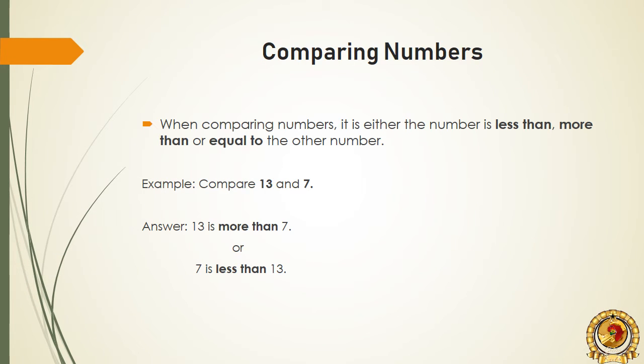Comparing numbers. When comparing numbers, it is either the number is less than, more than, or equal to the other number. Example: Compare 13 and 7.